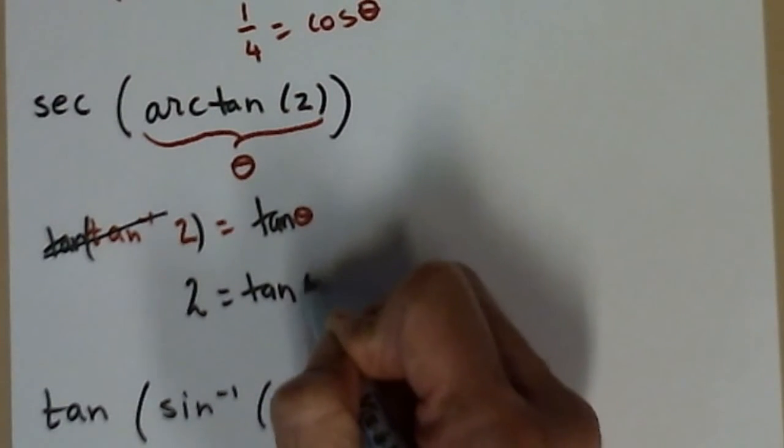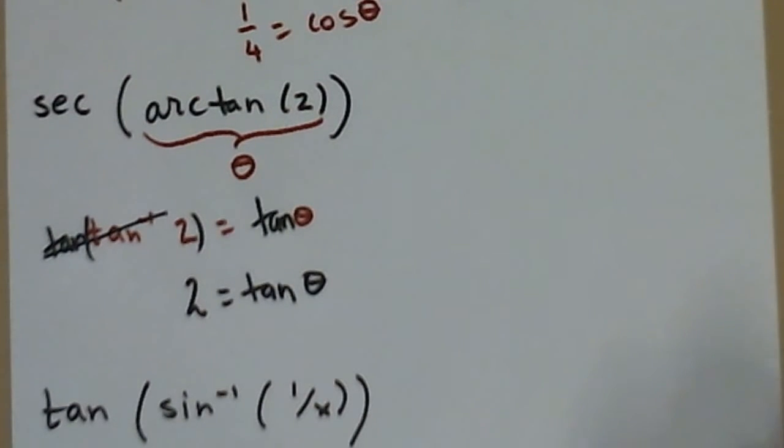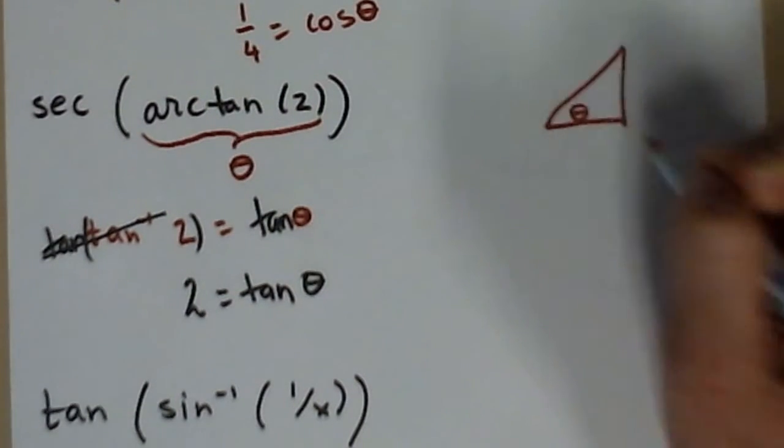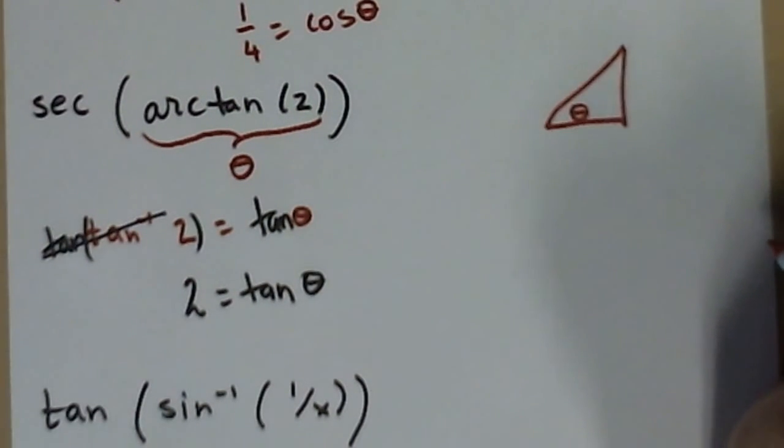On the right is the instructions on how to draw my triangle. So the tangent of theta—draw your triangle, find theta, and then label the sides so that the tangent of theta is two.